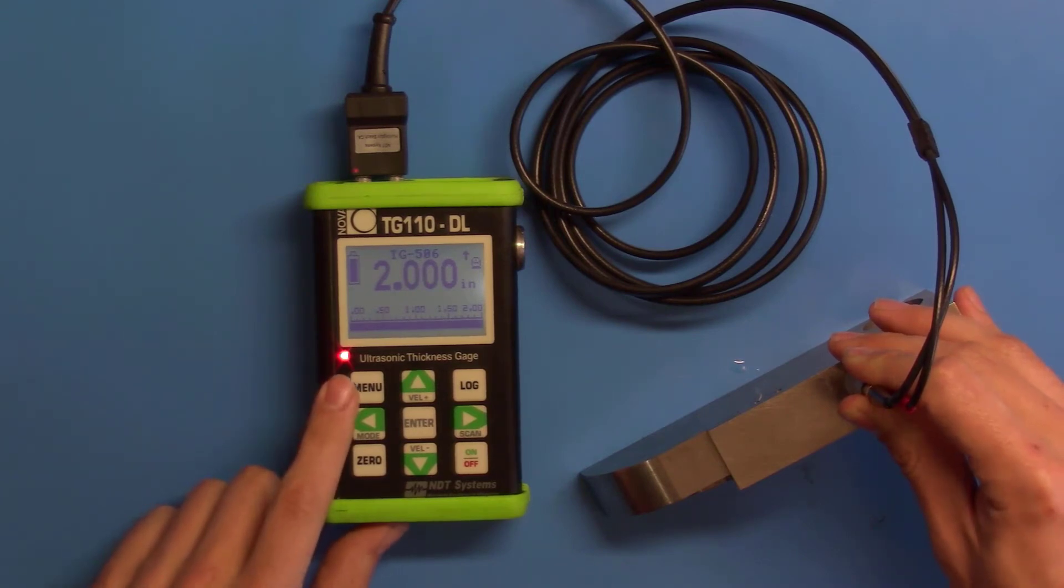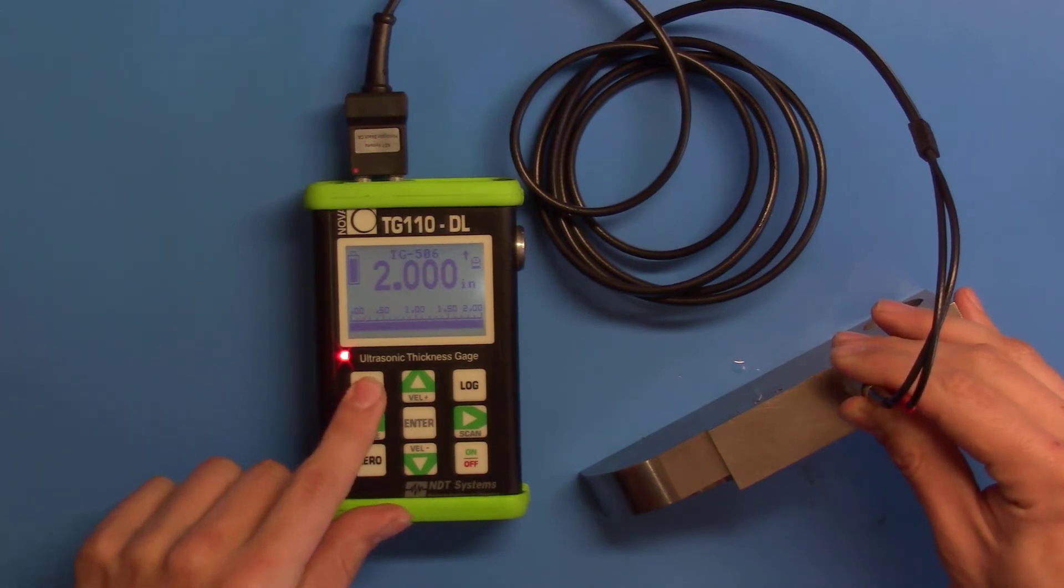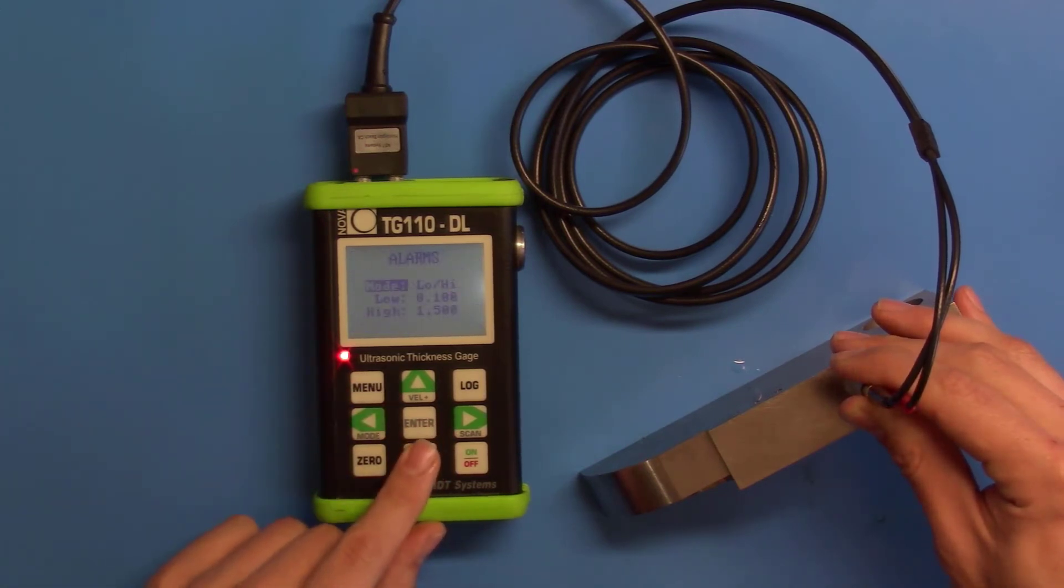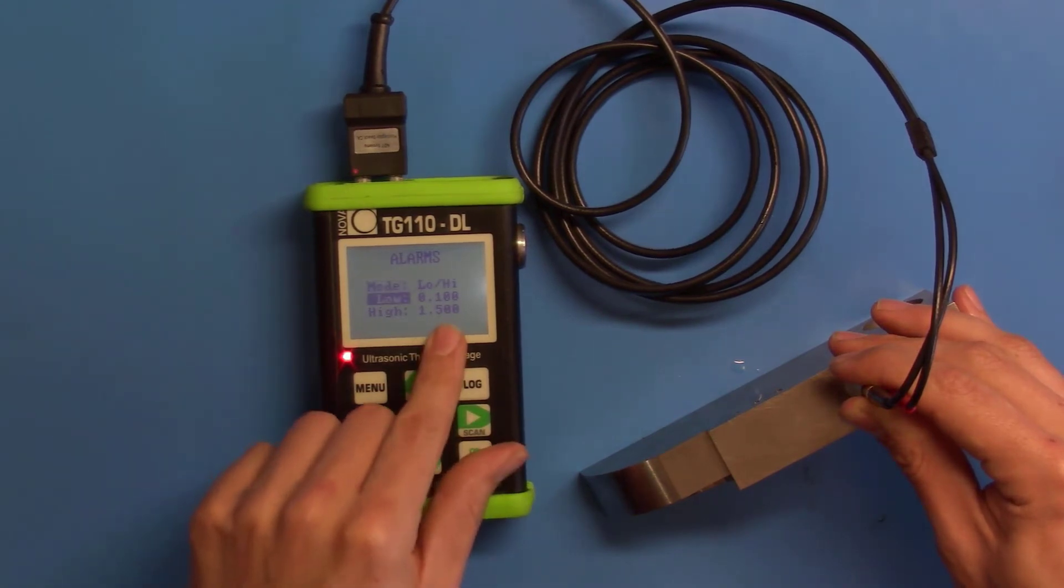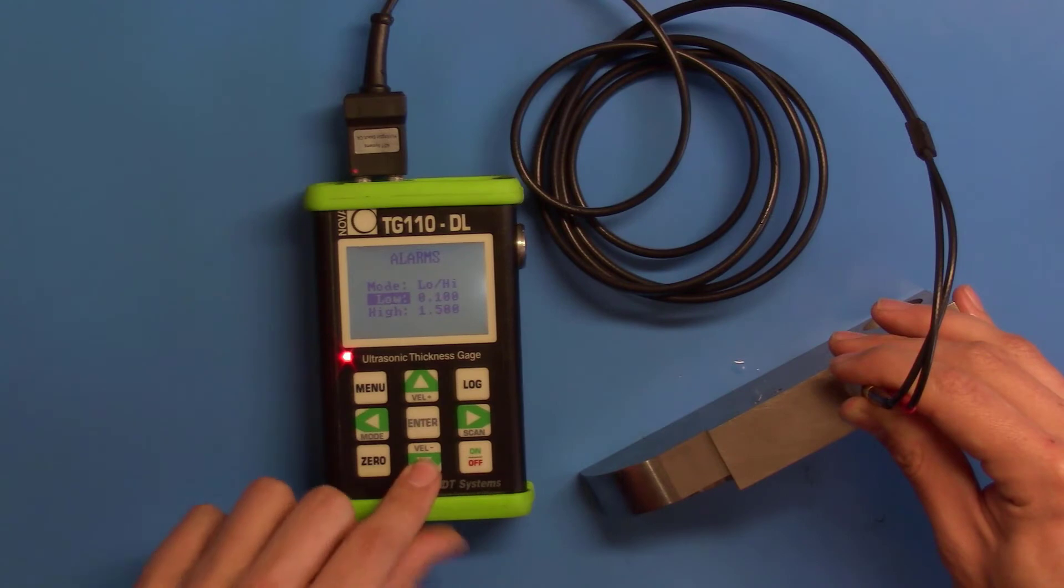You'll notice this little alarm light has come on. We can set the alarms in the menu. There are three modes and off. There's a low-high mode, high, and low. We'll use the low-high mode and set our low value to 0.1 inch, and our high value to 1.5 inches.